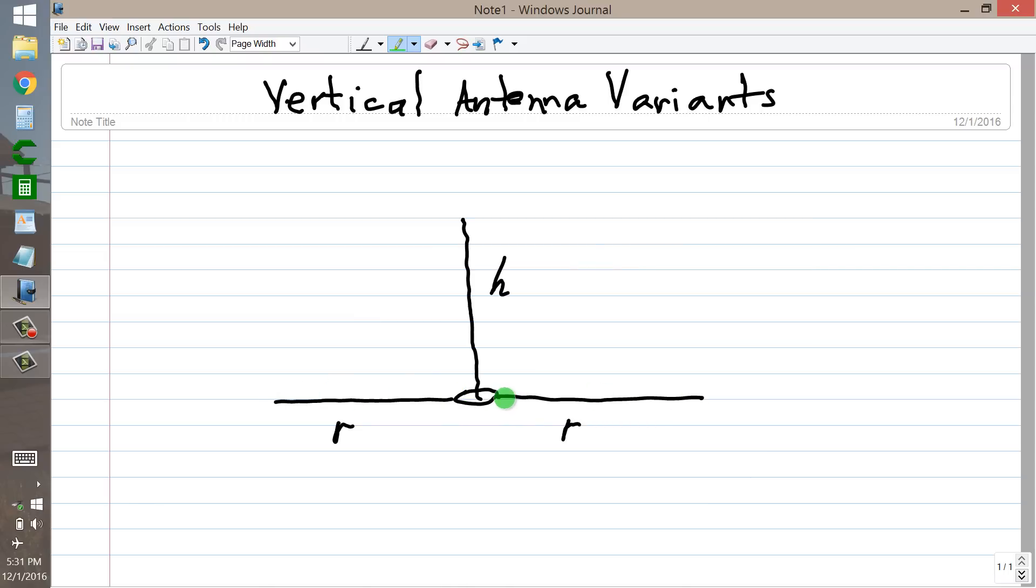Antenna for, I believe it was a quarter of a wavelength, or well, it was multi-band. He was able to adjust the length of the radials and the wire. But his point was, does the height of the antenna, a quarter of a wavelength h, have to be exactly a quarter of a wavelength?